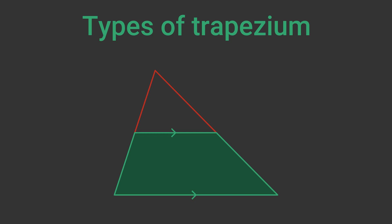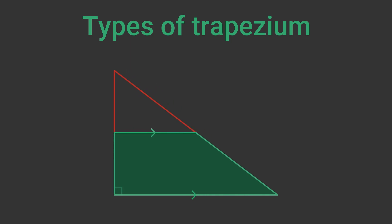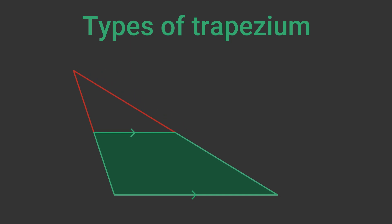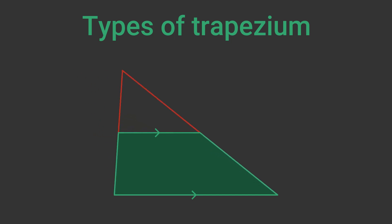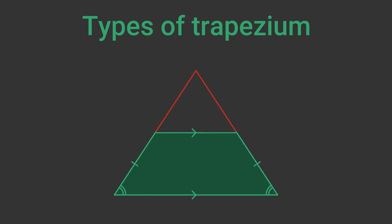Like a triangle, there are different types of trapezium. A trapezium where all the sides are unequal is called a scalene trapezium. A trapezium where one side makes an angle of 90 degrees with the base is called a right trapezium. A trapezium where one side makes an angle of more than 90 degrees with the base is called an obtuse trapezium — it is a slice through an obtuse triangle. A trapezium where the two slanted sides make the same angle at the base in opposite directions is called an isosceles trapezium; it is a slice through an isosceles triangle.